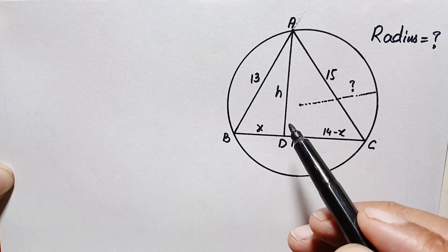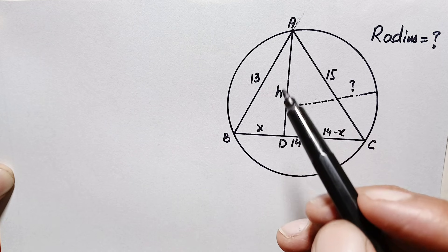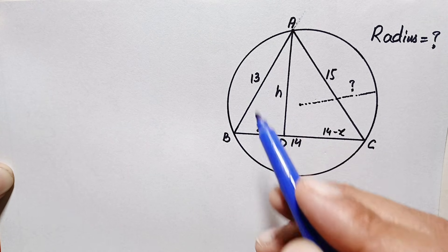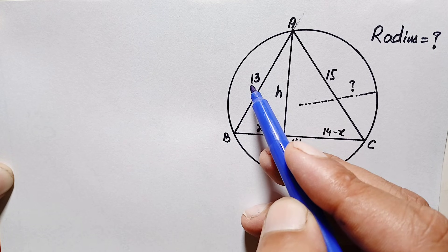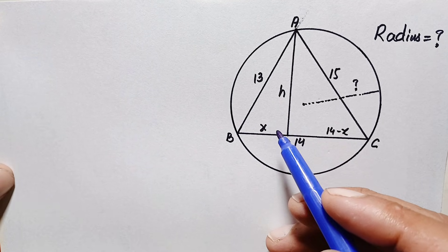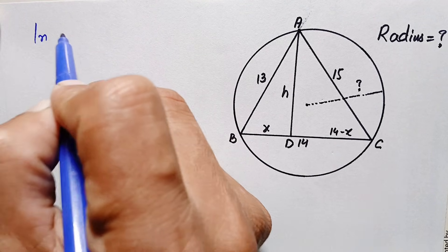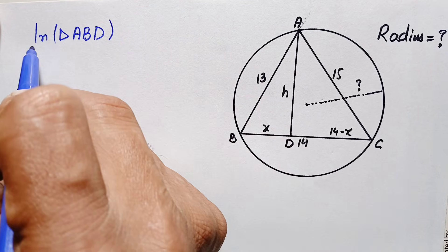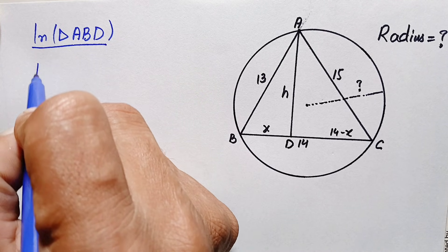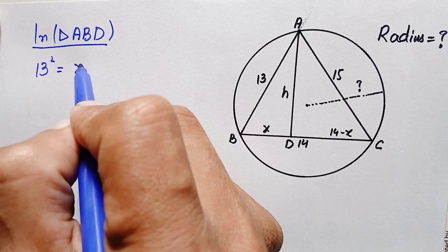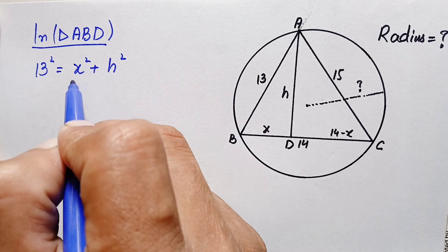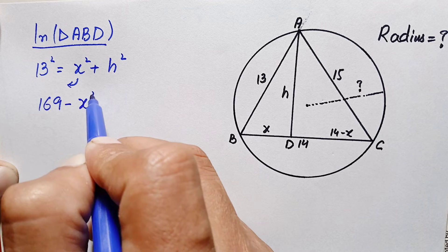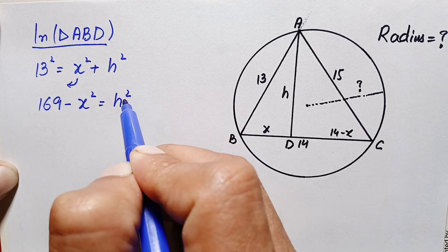We will apply the Pythagorean theorem in both right angle triangles to find the value of h. In triangle ABD, by the Pythagorean theorem, hypotenuse squared equals base squared plus perpendicular squared. Here hypotenuse is 13, base is x, and perpendicular is h. So this becomes: 13² = x² + h², which gives us 169 minus x² equals h². Let us call this equation number one.